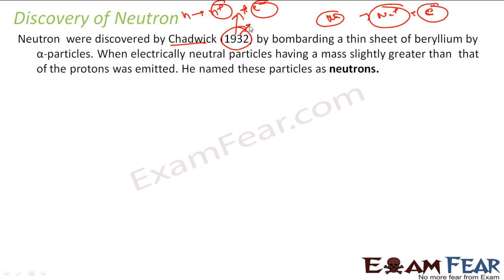So in 1932, this guy Chadwick, he got this neutron by bombarding beryllium by alpha particles. And what we got was carbon and neutron. These particles that he got had mass but no charge, and this guy called this particle as neutron.